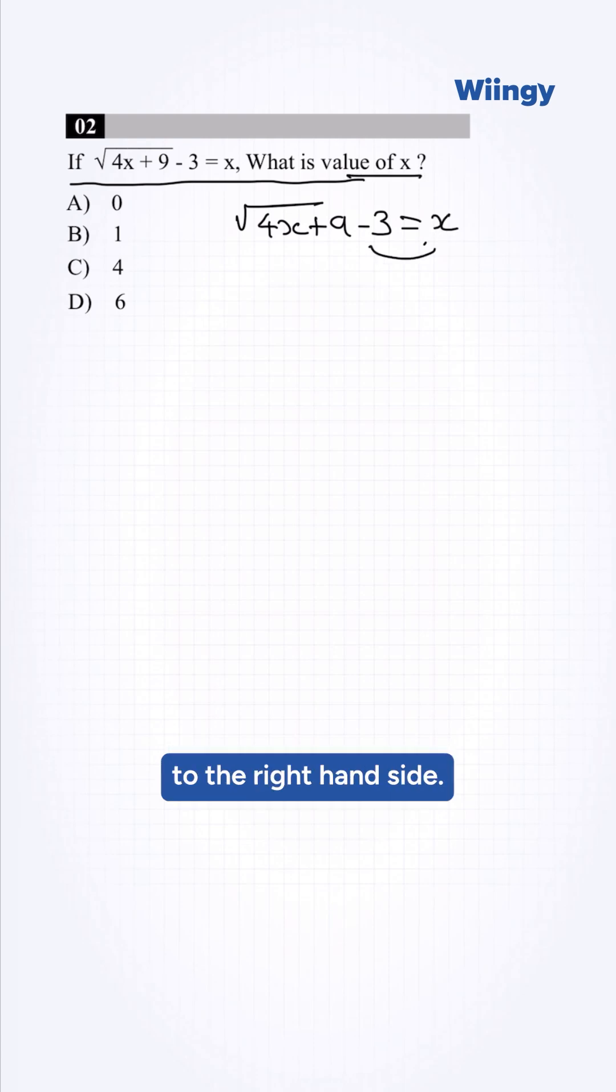First, we need to take this to the right-hand side. It will become √(4x+9) = x + 3.